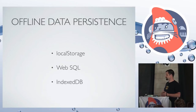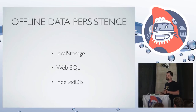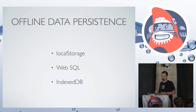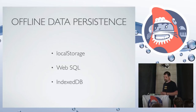In the browser today we have basically three mechanisms for offline storage. There's local storage, also called web storage — it's a key-value pair, kind of like cookies. It's a synchronous API, so it's really meant for small amounts of data. I wouldn't use it for a large data set.